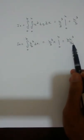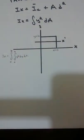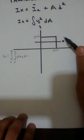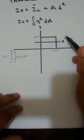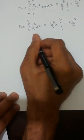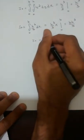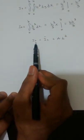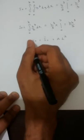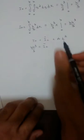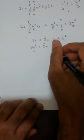Now, b h cubed over 3 is I sub x — the area moment of inertia of this rectangle rotating about the x-axis. But we actually want the centroidal area moment of inertia. Using the parallel axis theorem, which states I sub x equals I passing through the centroid plus A times d squared, we know I sub x equals b h cubed over 3. So: b h cubed over 3 equals I sub c plus area times d squared.